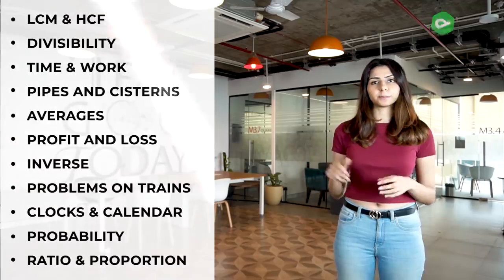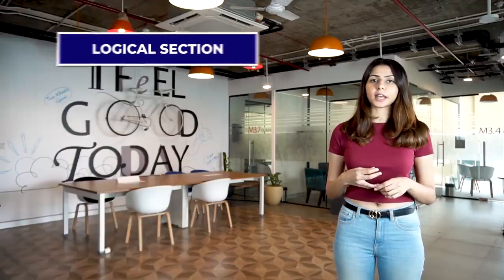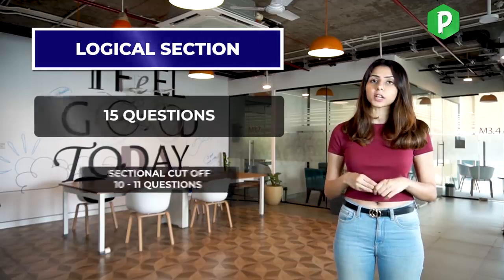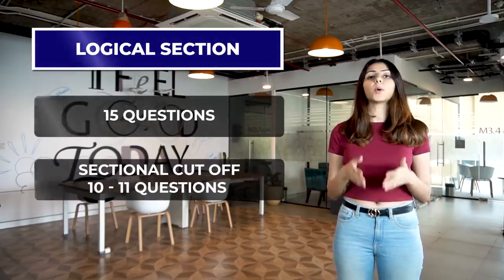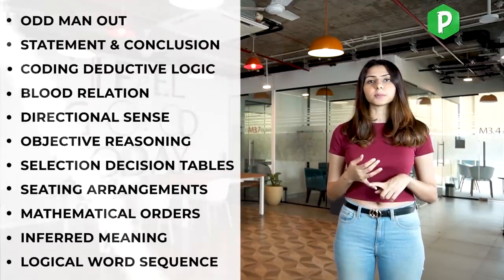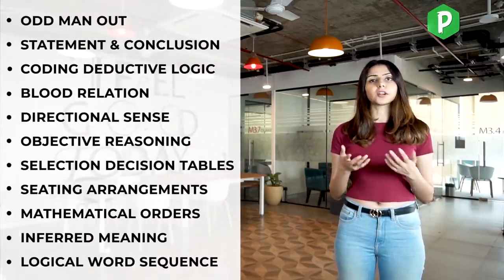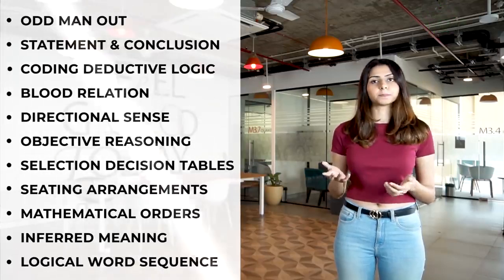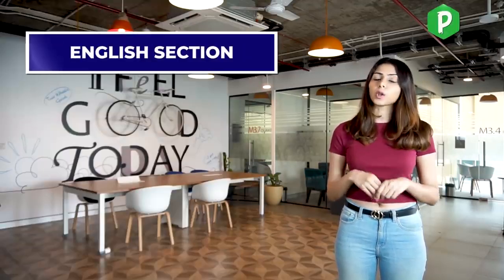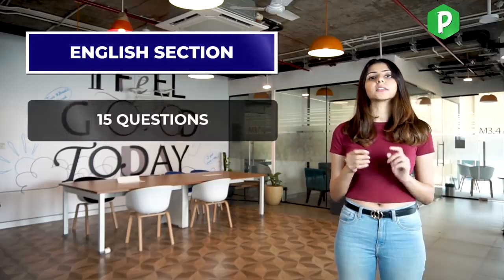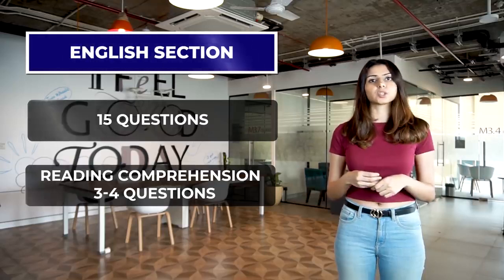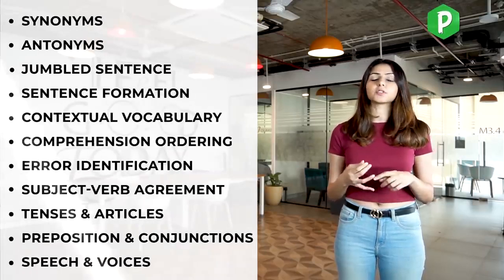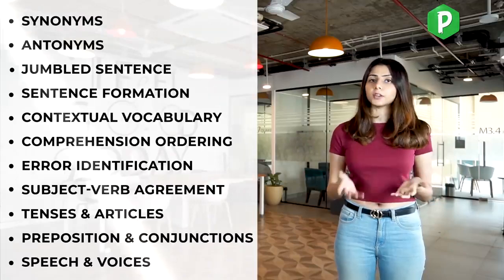The logical section also has 15 questions and the sectional cutoff is approximately 10 to 11 questions. Important topics include decisional tables, directional sense, blood relations, and others as shown on screen. The English section also has 15 questions; reading comprehension accounts for about three to four questions, and other topics include para jumbles, subject-verb agreement, synonyms, antonyms, and others mentioned on screen.